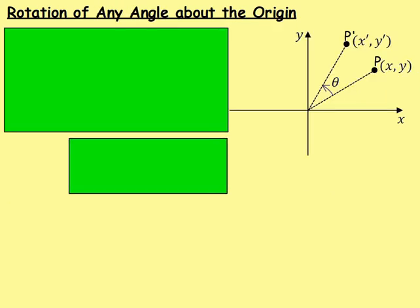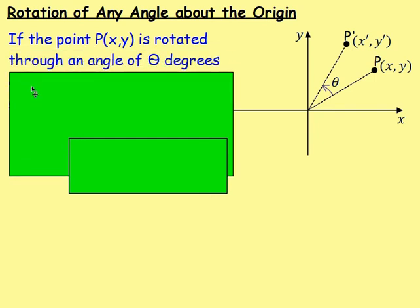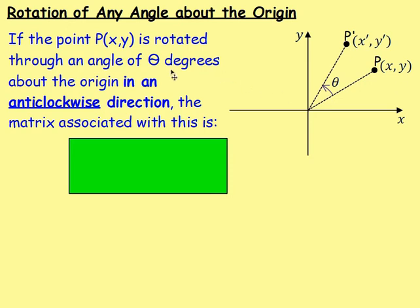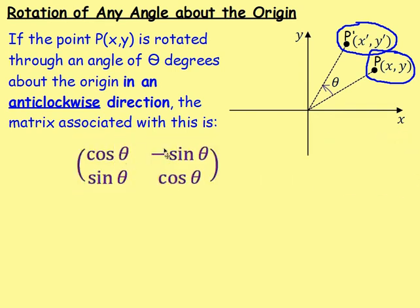Next, rotation of any angle about the origin. We looked at 180 degrees and 90 degrees, but it won't always be those. If a point P is rotated through an angle theta degrees about the origin in an anticlockwise rotation, the matrix associated with this — which is on the formula sheet — is given by [cos θ, -sin θ, sin θ, cos θ]. You can work this both in degrees and radians.